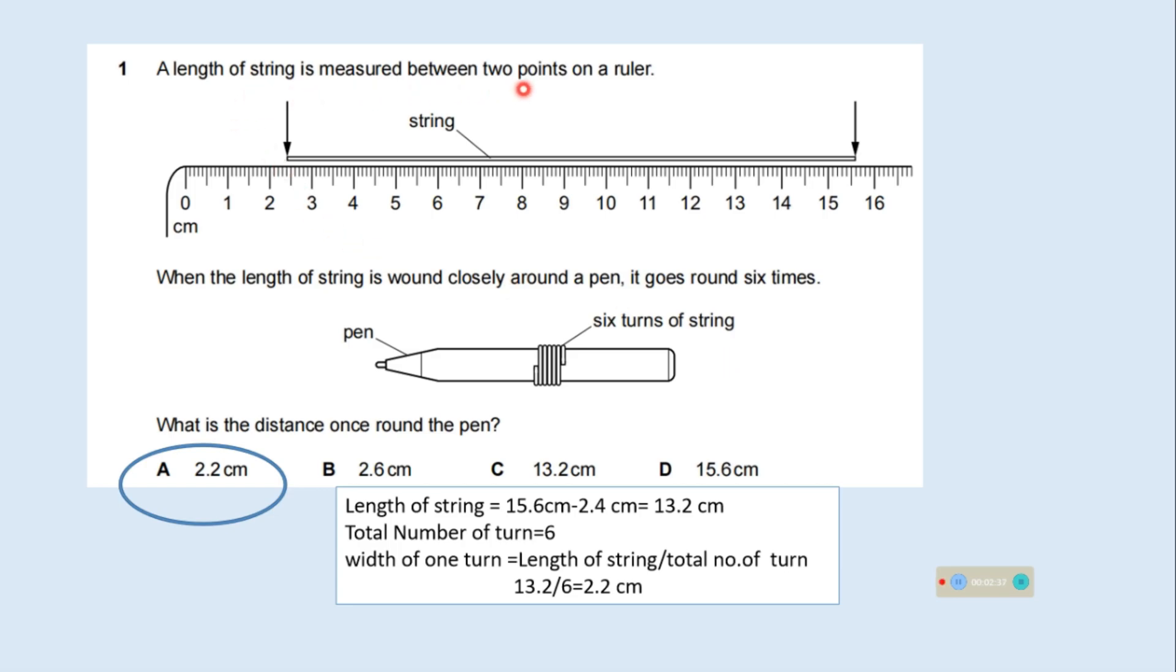A length of string is measured between two points on a ruler. When the length of string is wound closely around a pen, it goes round 6 times. Length of string is 15.6 minus 2.4, this is 13.2 cm. Number of turns 6. What is the distance once round the pen? Width of 1 turn is equal to length of string divided by total number of turns. It is 13.2 divided by 6, which equals 2.2 cm. Option A is the correct one.